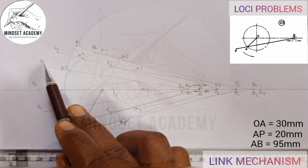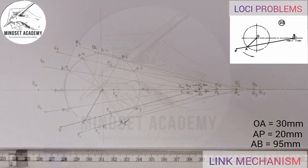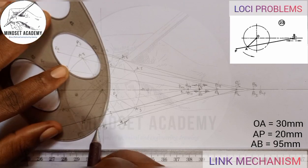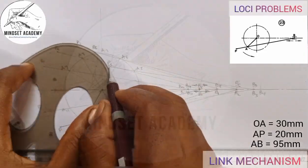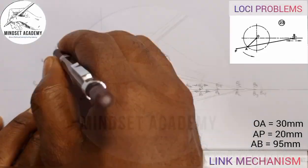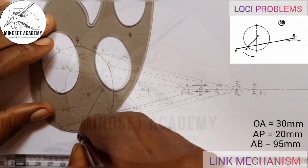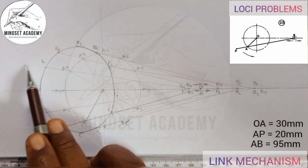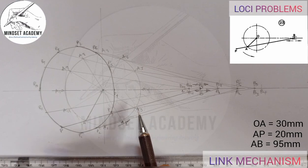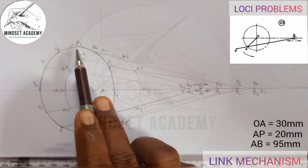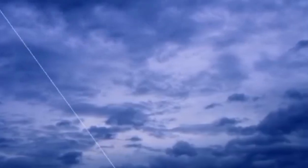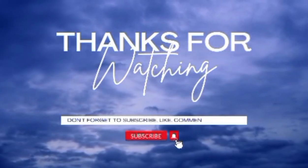All these points P, P1 through P11 — these are the loci. I only need to draw the locus of P. The locus of P is sometimes elliptical in shape, so I'll use my French curve to draw it, starting from P through all the points. As the crank rotates anti-clockwise, point B moves to and fro along the line, and this is the path that the locus of P forms. If you found this helpful, please like, subscribe, and share. Thanks for watching.